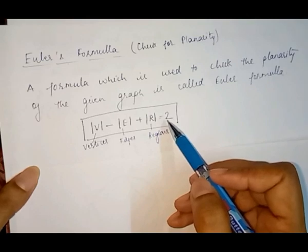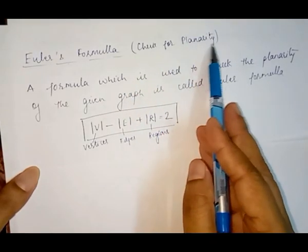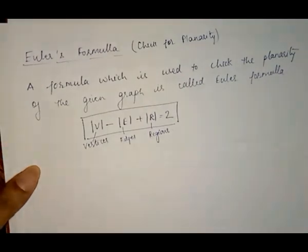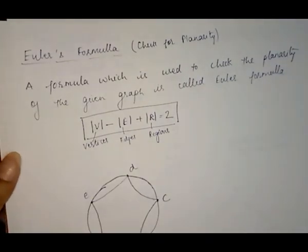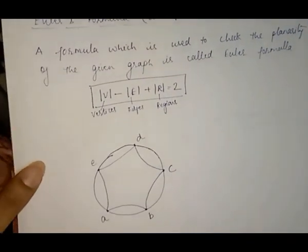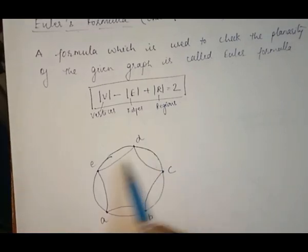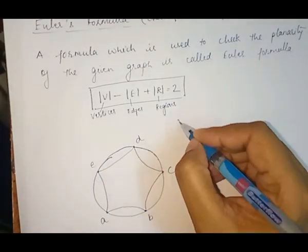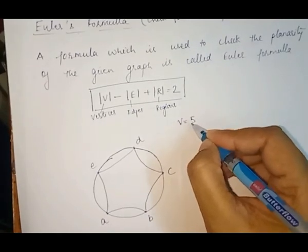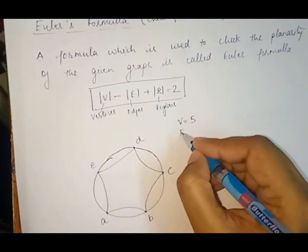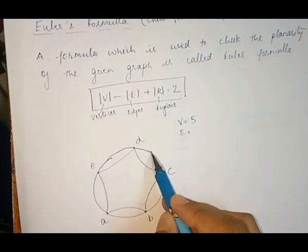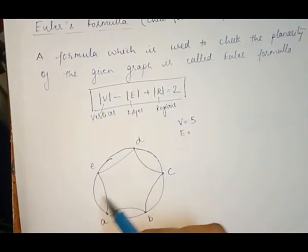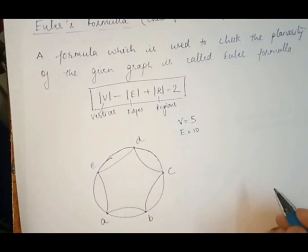Euler's formula is used for checking planarity, whether a graph is planar or not. Suppose we take this example: we have a graph with vertices a, b, c, d, e. The number of vertices is 5. Counting edges: 1, 2, 3, 4, 5, 6, 7, 8, 9, 10. Edges equals 10.